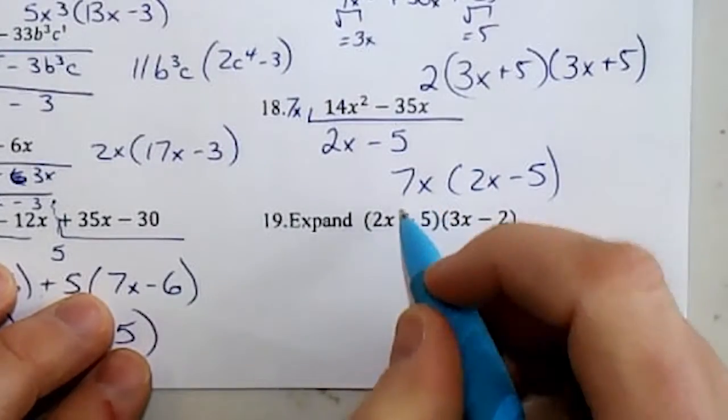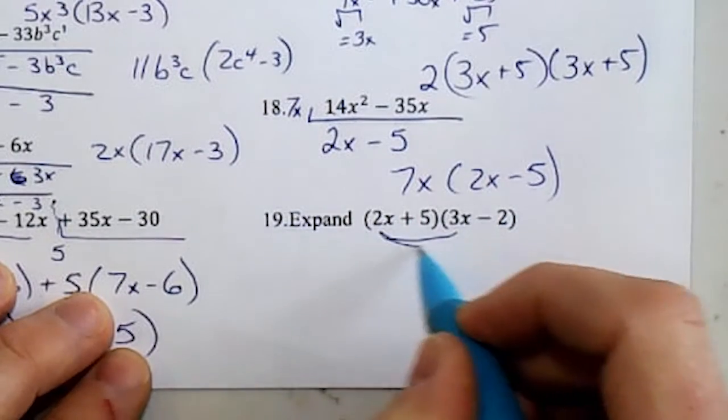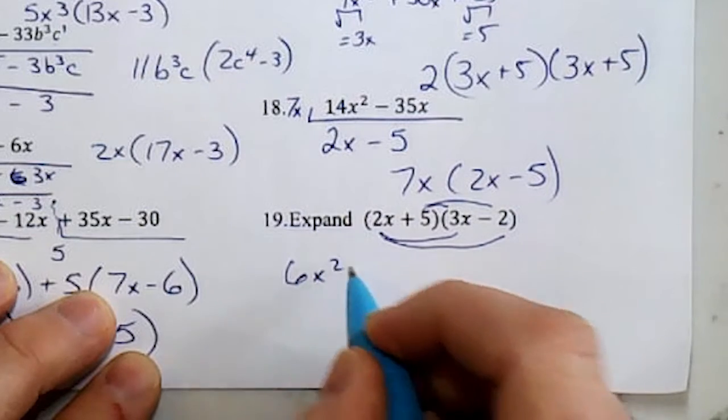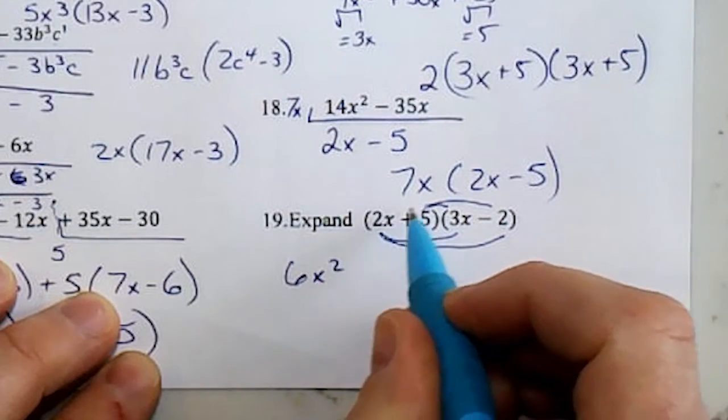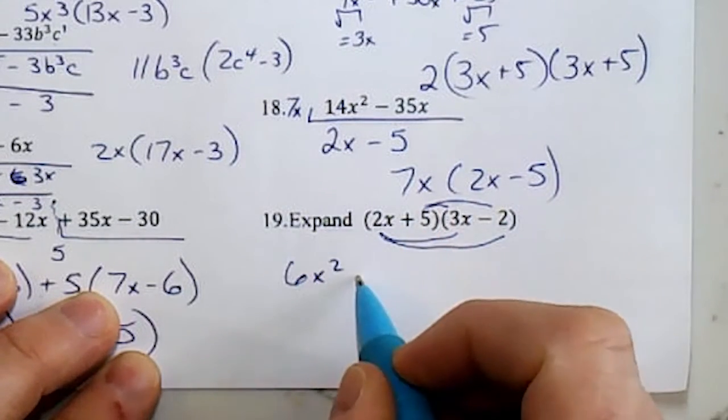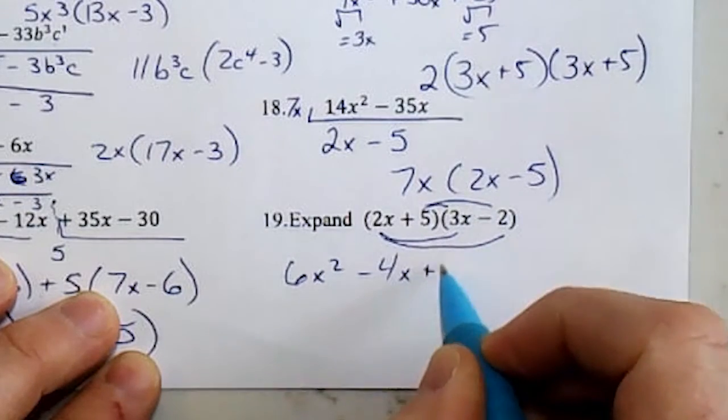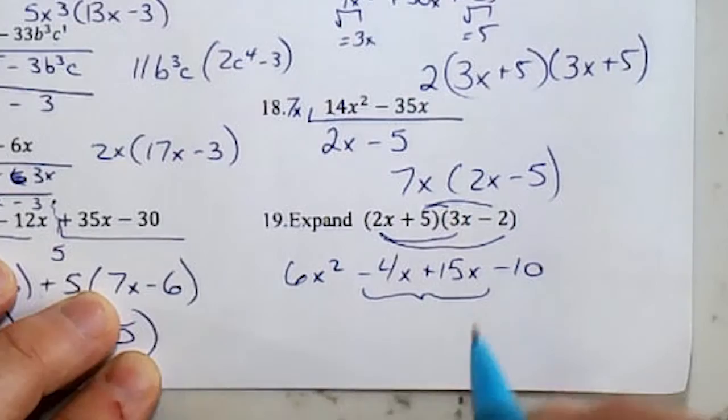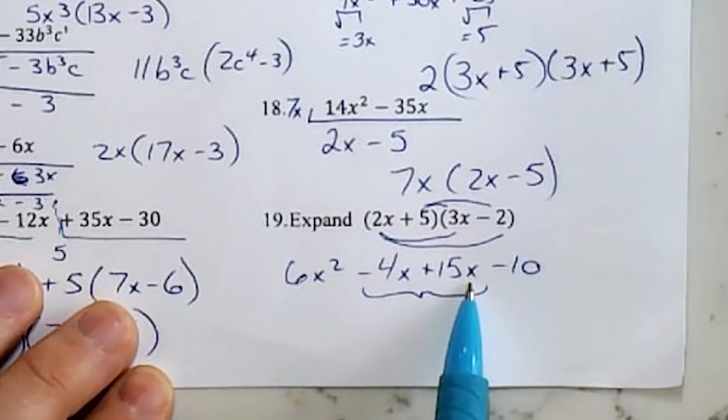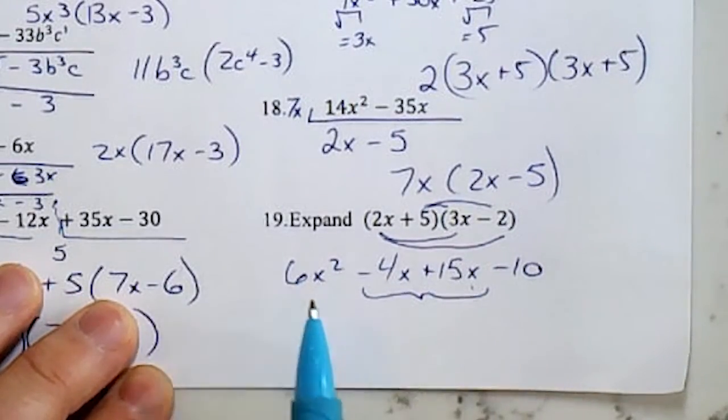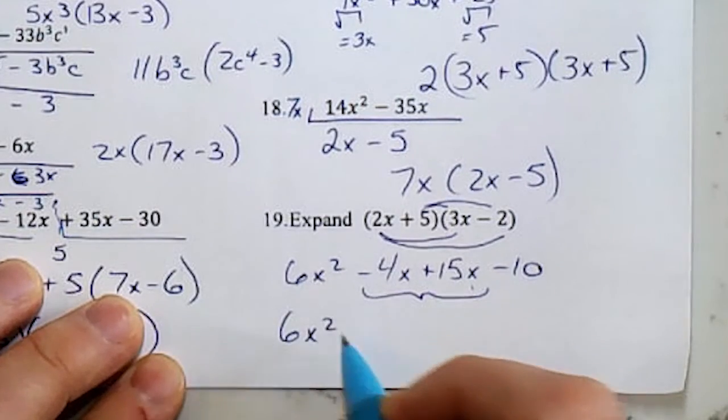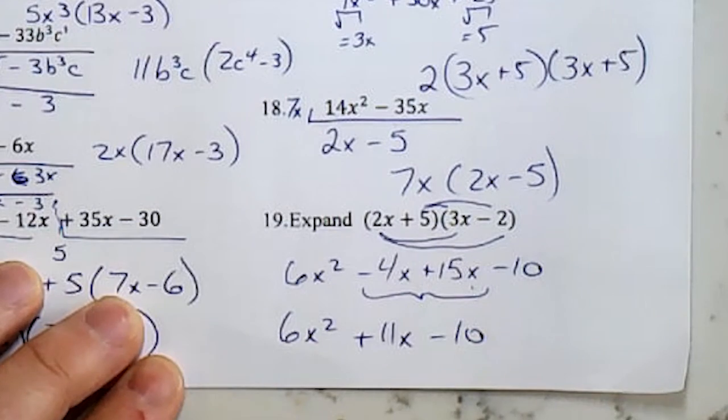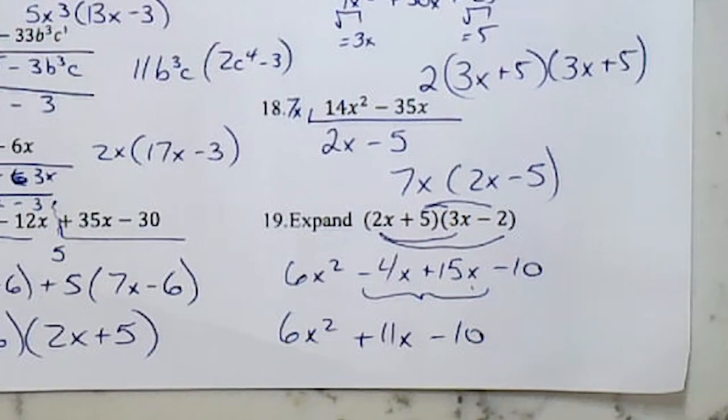And this one, we're just going to multiply everything. And usually the two middle terms, the x and the x, they can go together. Do not combine the x squared, it's different. And we get our answer.